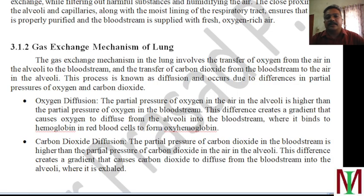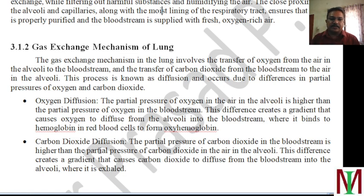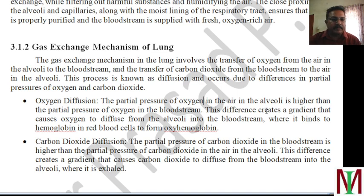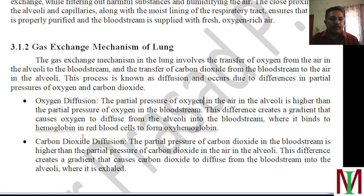The gas exchange mechanism — why oxygen goes to the bloodstream and carbon dioxide comes back to the lung and is exhaled — is due to the pressure difference: the partial pressure of oxygen and the partial pressure of carbon dioxide. Oxygen diffusion: the partial pressure of oxygen in the air in the alveoli is higher than the partial pressure of oxygen in the bloodstream. This difference creates a gradient which causes oxygen to diffuse from the alveoli to the bloodstream, where it binds to hemoglobin in the red blood cells to form oxyhemoglobin.